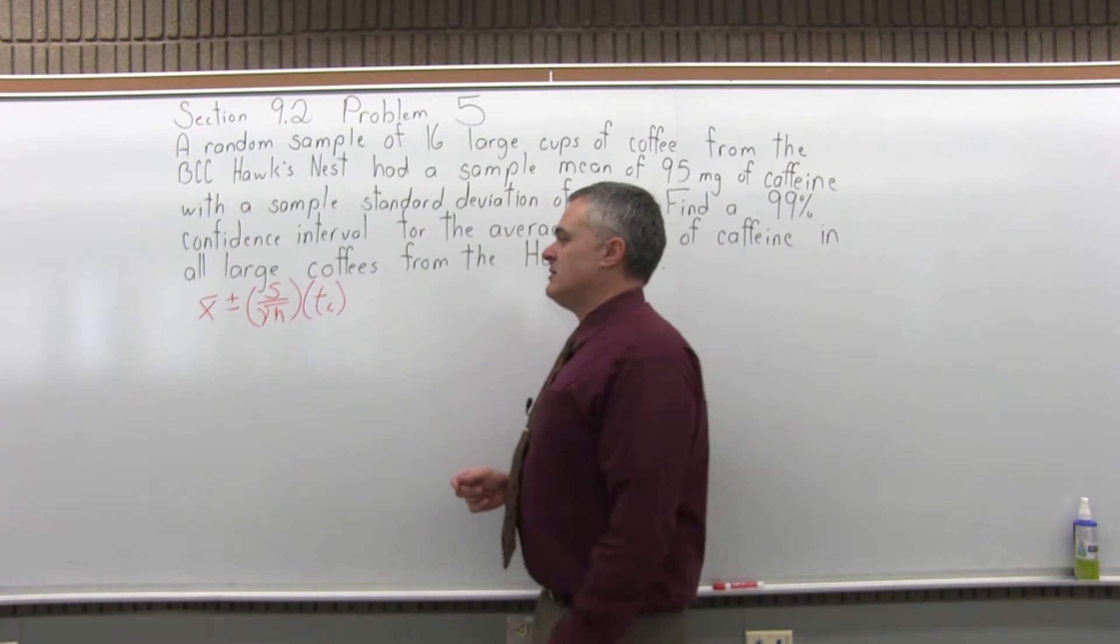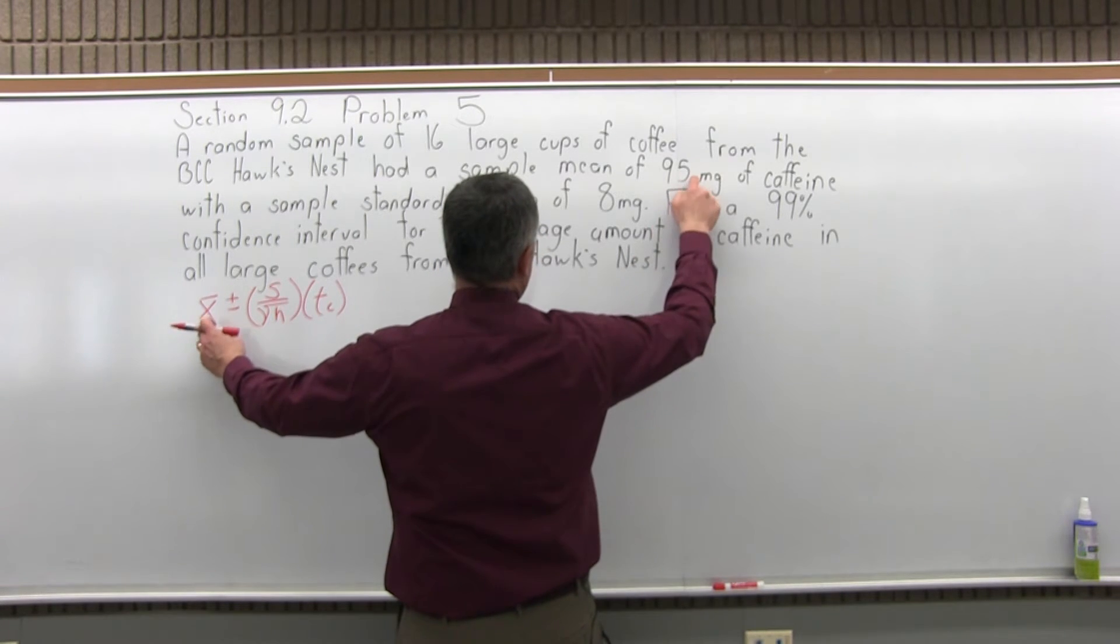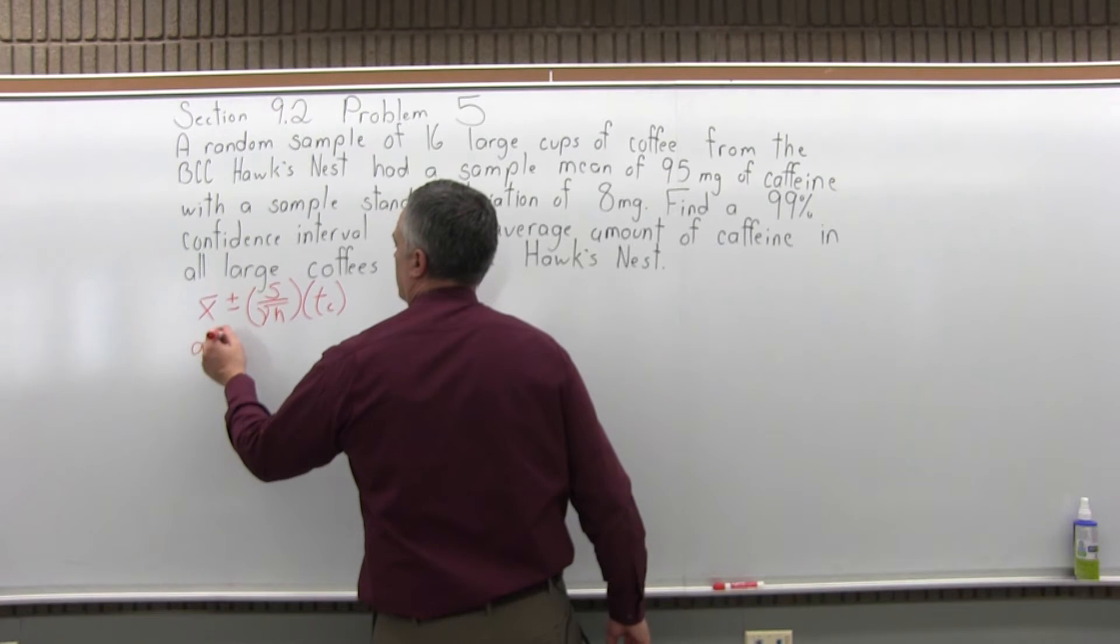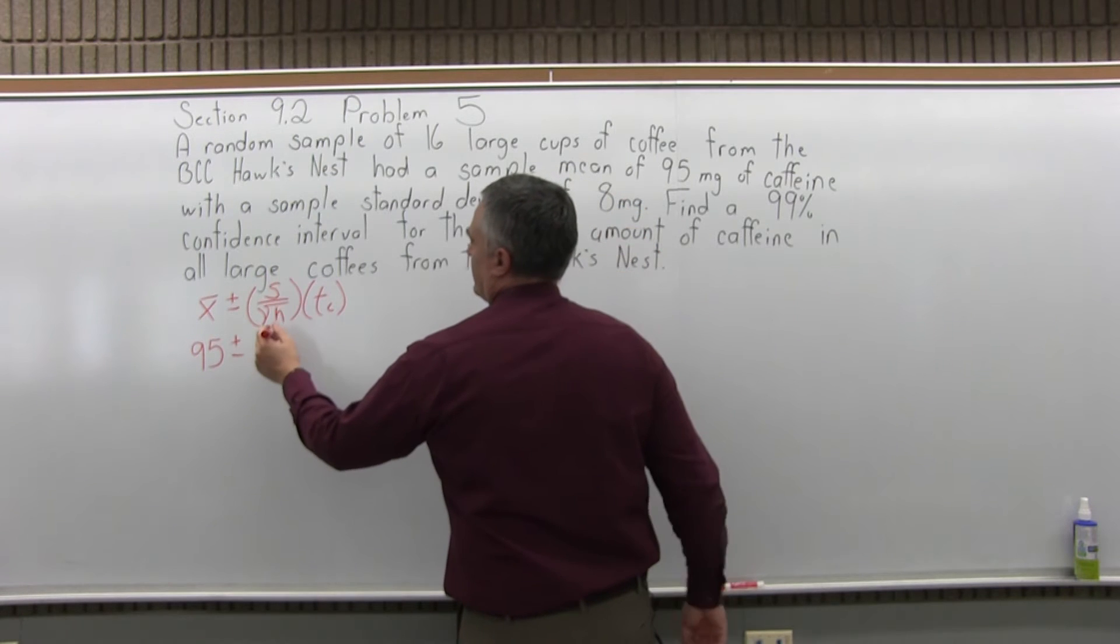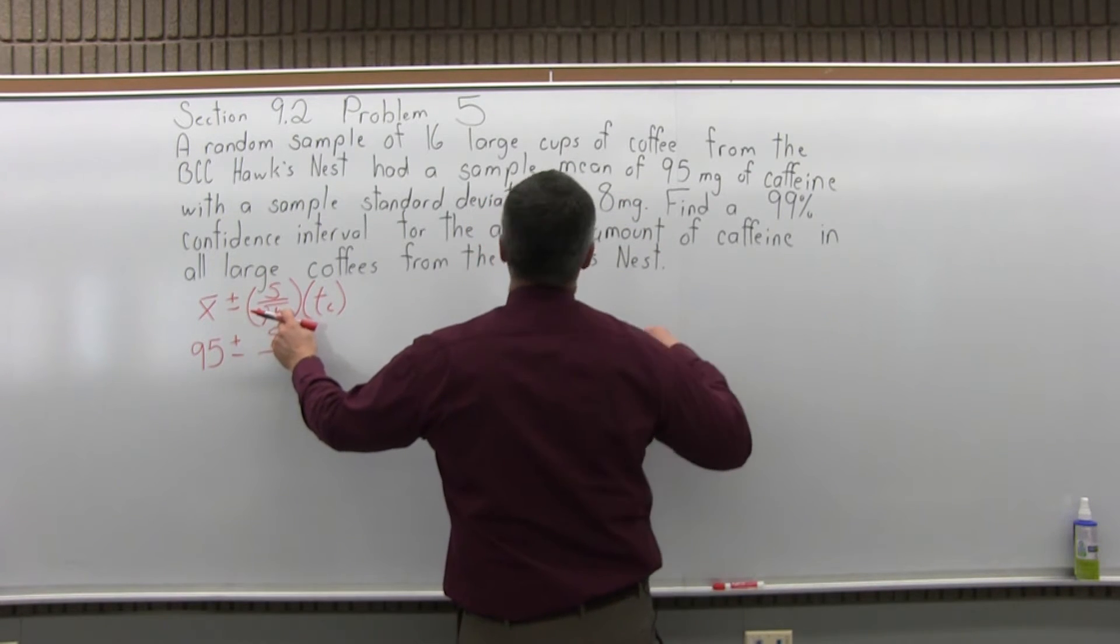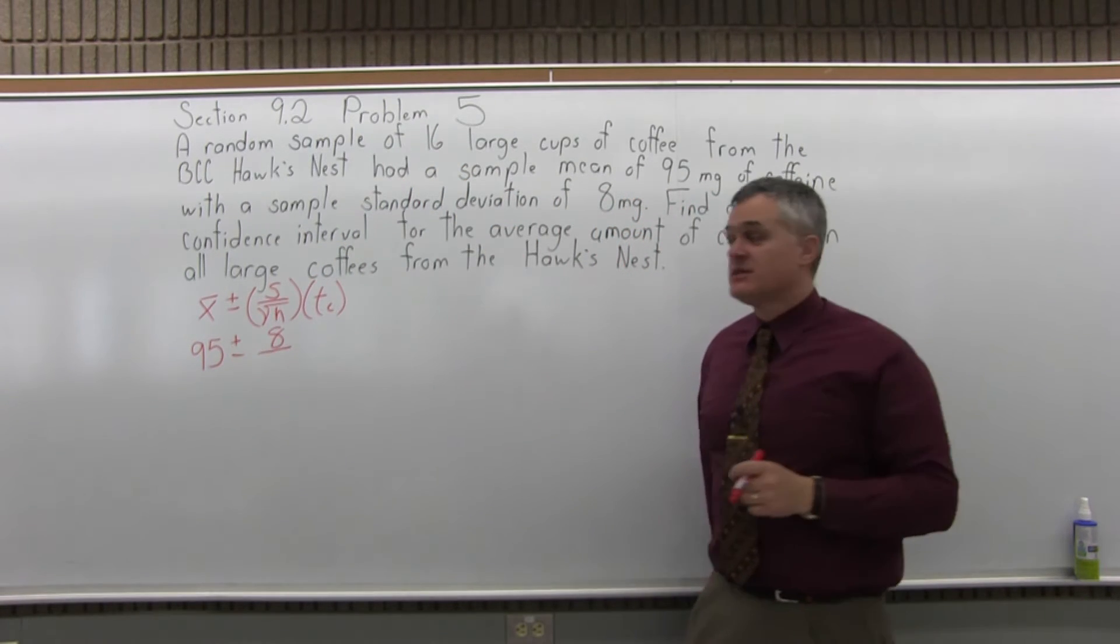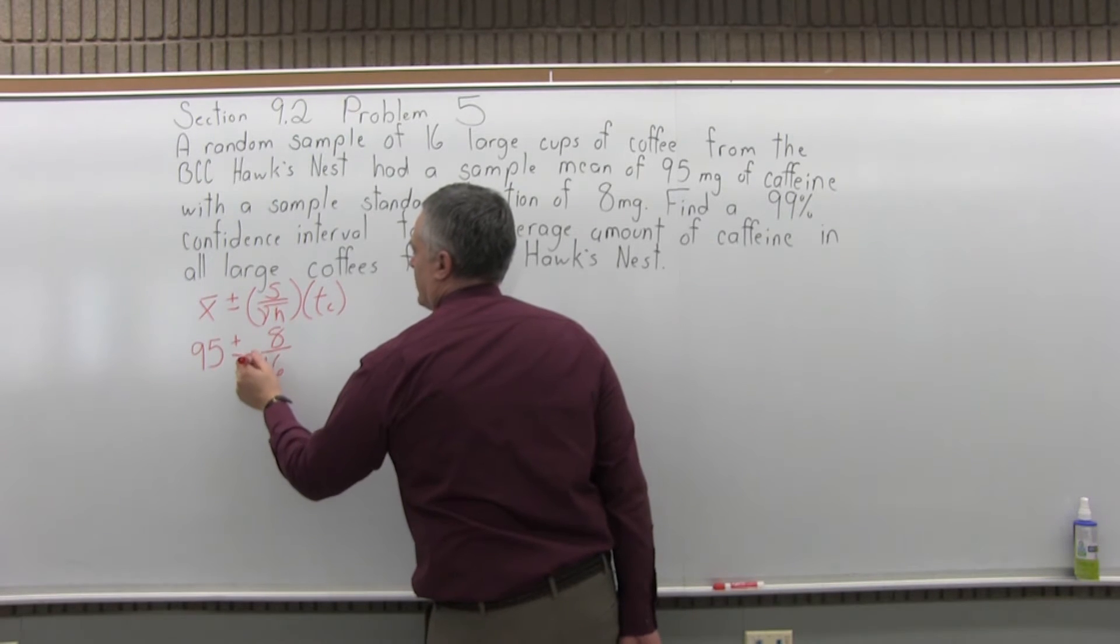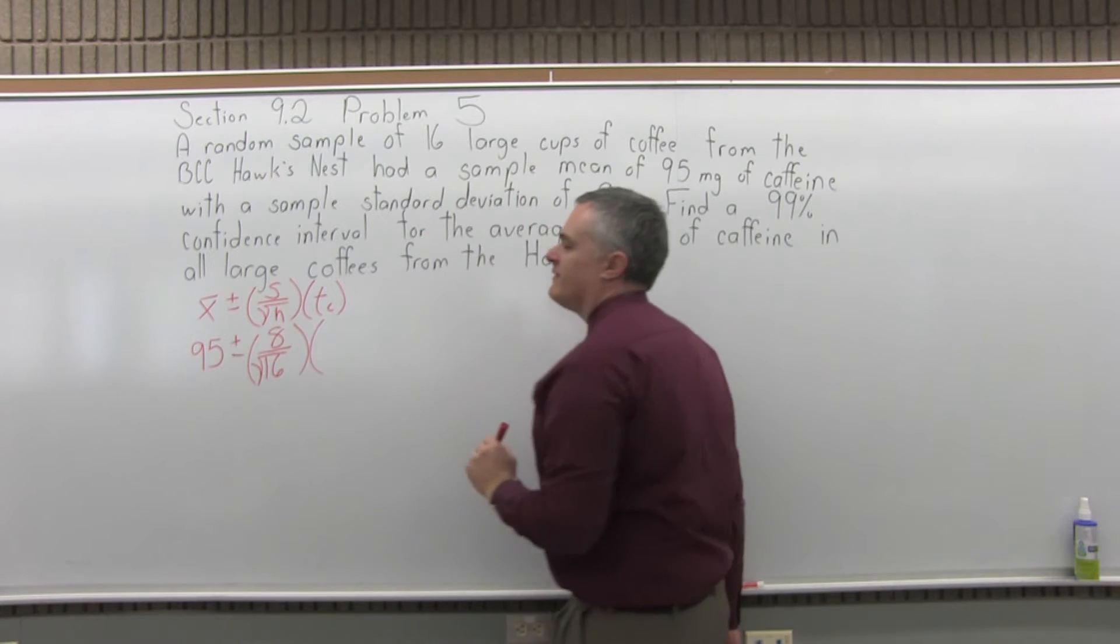So let's fill in the formula. x̄ is the sample mean, which the question tells us is 95 mg of caffeine. So 95 is the x̄. Plus or minus s, the sample standard deviation, which the question also tells us is 8 over the square root of n. n is the size of the sample. So the size of our sample is 16. There are 16 cups of coffee in the sample. Don't forget the square root. And t sub c is the confidence coefficient.